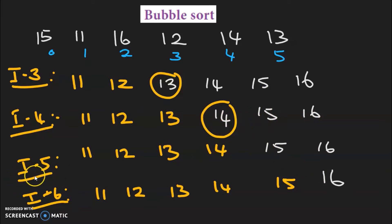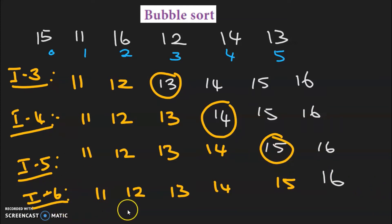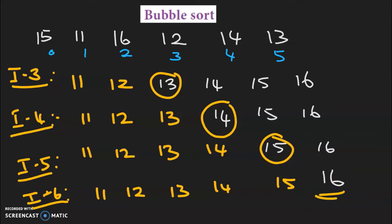In the fifth iteration, the first four places are fixed. The fifth element comparison happens, but there will not be any exchange. So at the end of the fifth iteration, the fifth element is in position. In the sixth iteration, we need to start from the sixth position, but there is only one element — it has already come to its position. So this will be the sorted array.